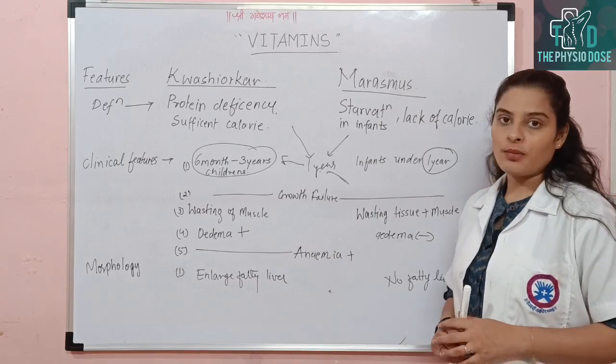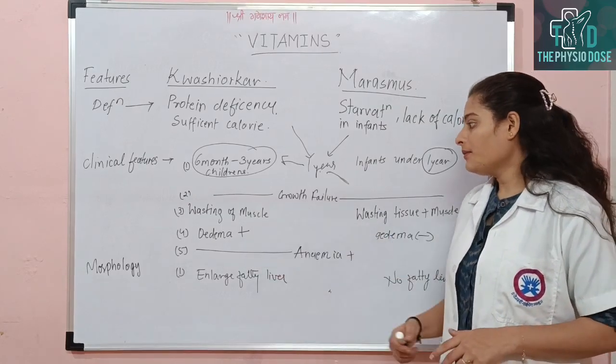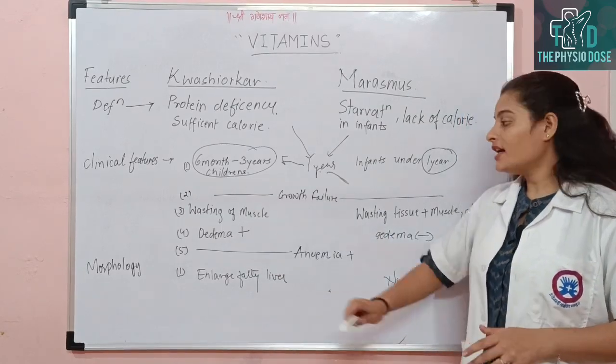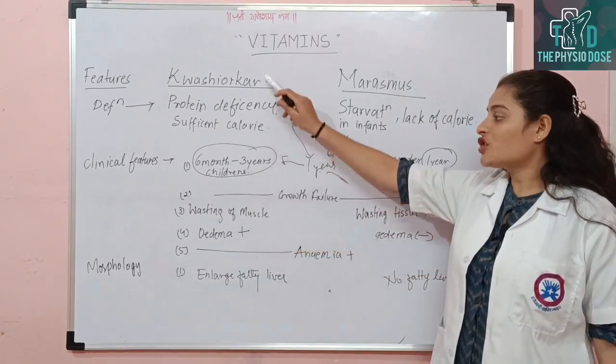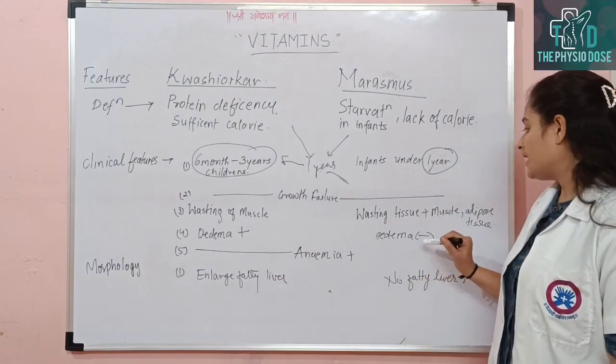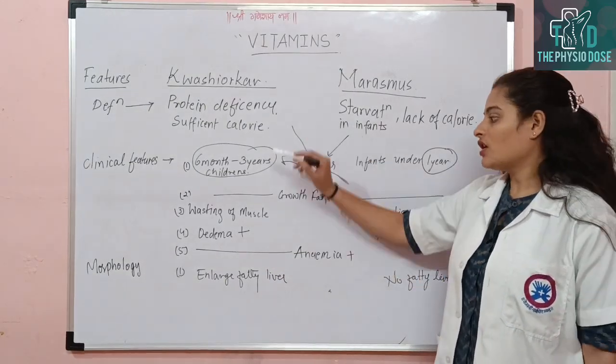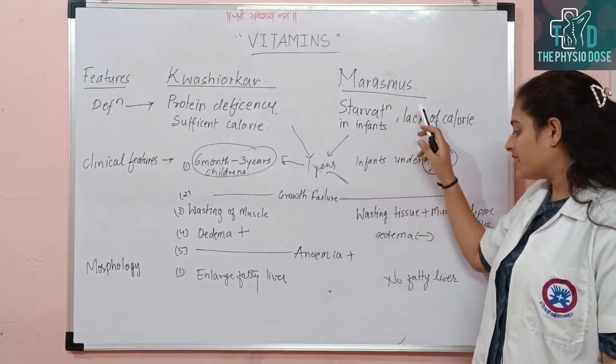The next topic is edema. Edema is common with protein deficiency, so it is present in Kwashiorkor, but it is absent in Marasmus.